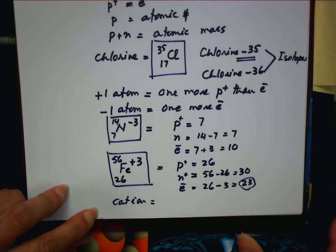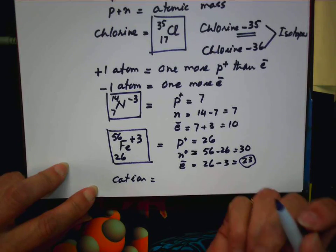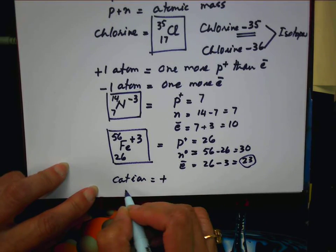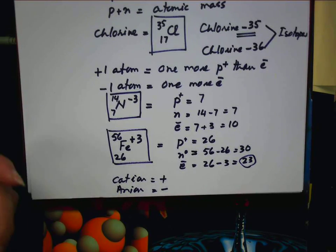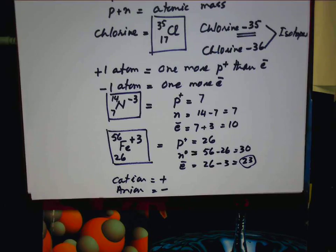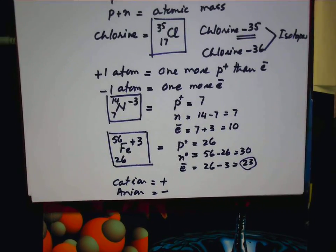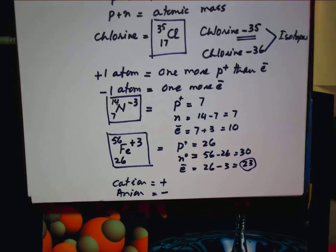Now, cation is positive. Anion is negative. That's all, guys. Got it? So study, study, study.